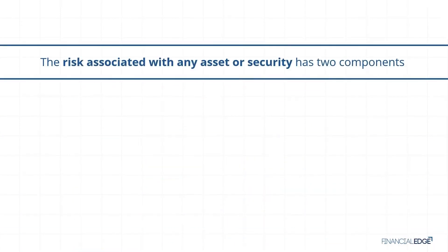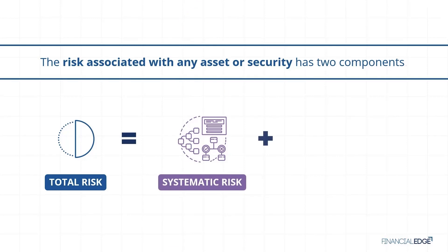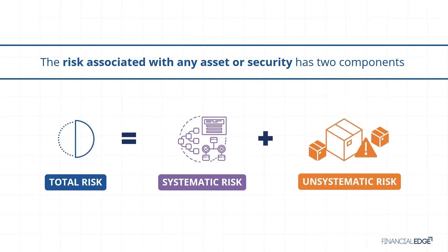Total risk is usually measured by the statistical calculation of standard deviation, which measures how dispersed values are from the average. It is comprised of two components: systematic risk and unsystematic risk.